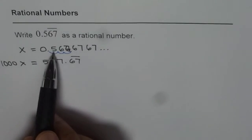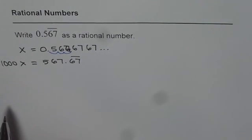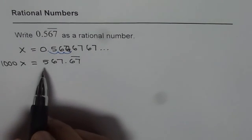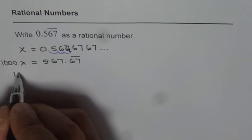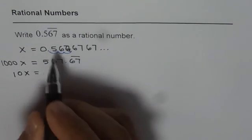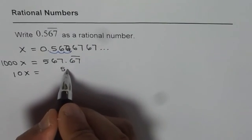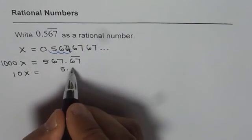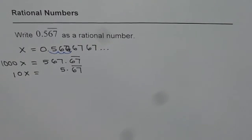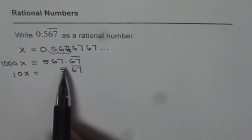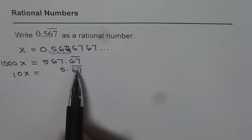Now if x is 0.567 recurring, then what is equal to 10 times x? 10 times x will be 5.6767, which I can write as 67 repeating. Do you see that? So what we got here is that after decimal, we have the repeating set, and that is the strategy.